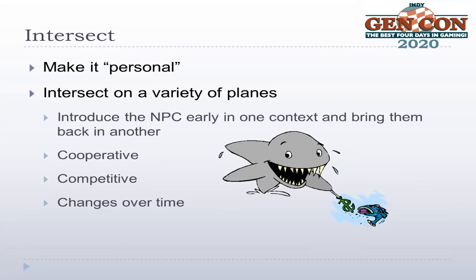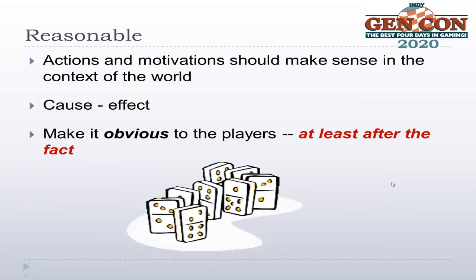Next letter is R for Reasonable. All of the actions and motivations of your non-player characters should be reasonable in the minds of those NPCs — they should make sense in the context of the world. When they do something, there should be cause and effect; it should make logical sense. This is Perrin Principle stuff. There should be some way for people to predict what will happen. That predictability is one of the main things that allows people to suspend disbelief.